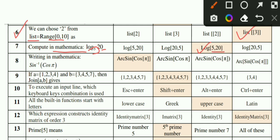MCQ number 8: Writing in Mathematica the sine inverse of cosine of pi - you will write in Mathematica using the ArcSin function with the appropriate symbol and sign. This is the correct option.